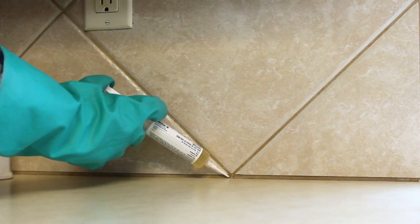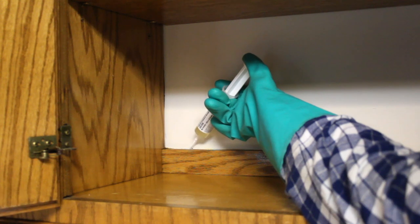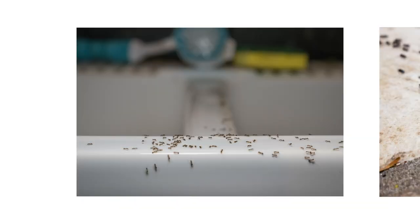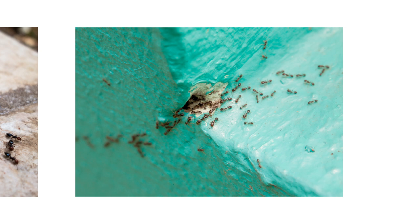Most bait products should be placed in spots where ant activity has been observed. This can be around drains, directly on ant trails, or wherever you've seen ants enter or exit your home. Be sure to place baits in areas that are inaccessible to children or pets.